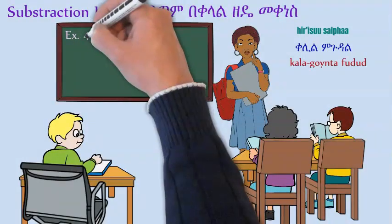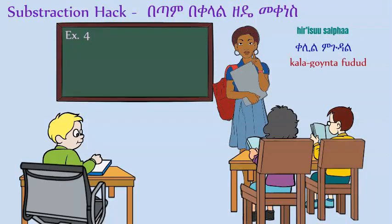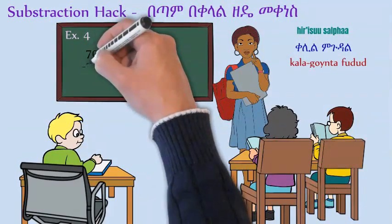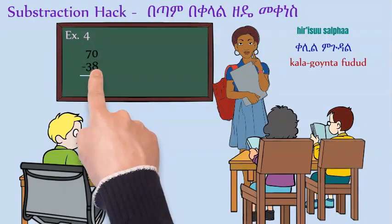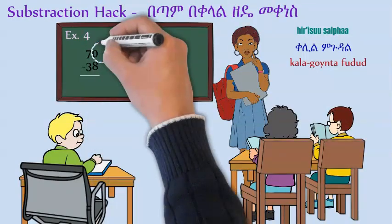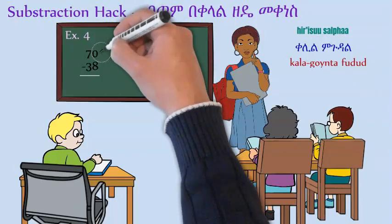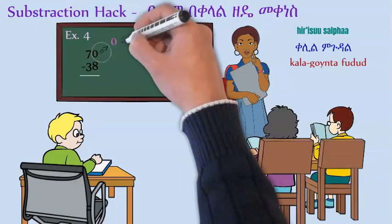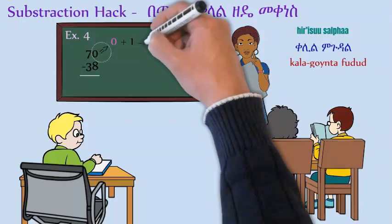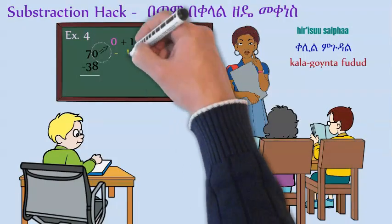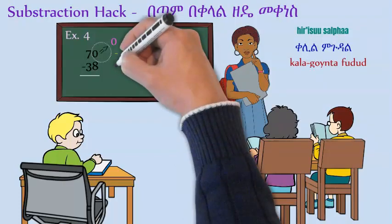How about if the number was a zero? Example: 70 minus 38. We still have to borrow 1 from 7 and make it 10. So instead, we say the last number is 0, and 0 plus 1 is 1. So if you take 1 from both 70 and 38, from 70 minus 1, we get 69. And from 38 minus 1, we get 37.